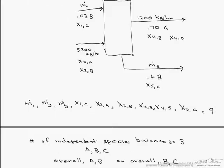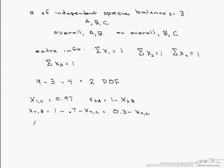And finally in stream 5 we can figure out x5c by just subtracting that 0.6 from 1 and this has to equal 0.4. So we have solved for 4 of our unknowns.